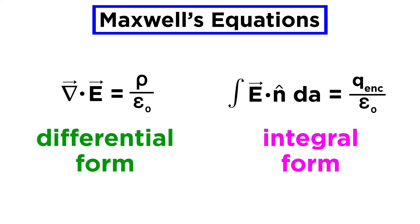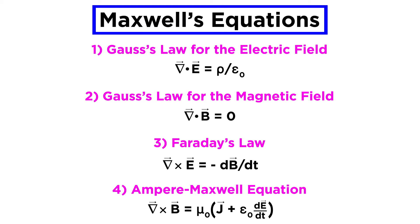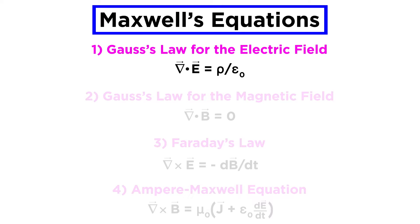Each of these four equations has two forms, a differential form and an integral form. We are going to examine Maxwell's four equations one at a time over the next four tutorials. The first one is Gauss's law for the electric field, so let's start with the foundational concepts behind the derivation of this law.